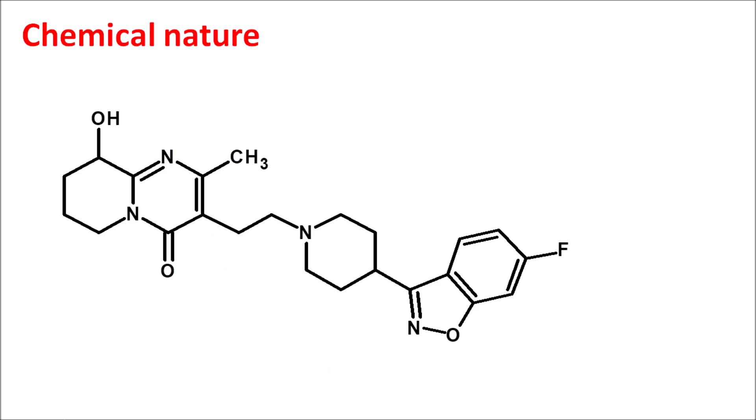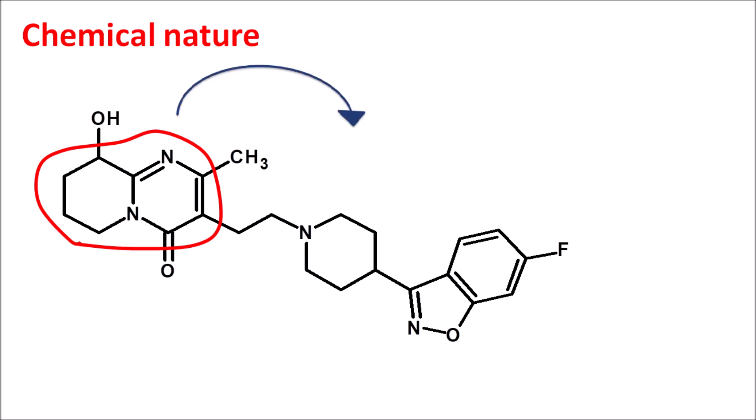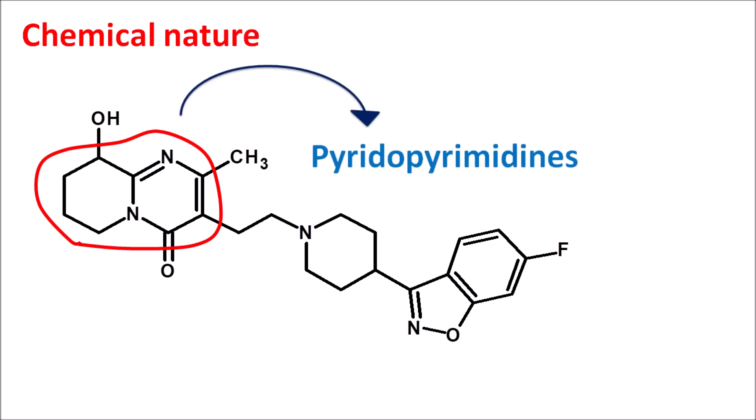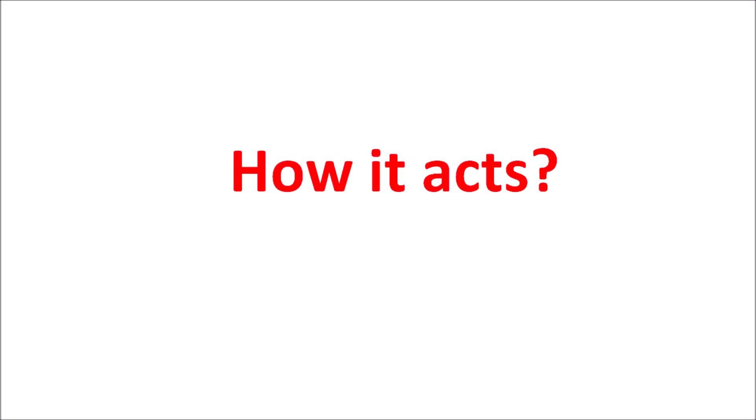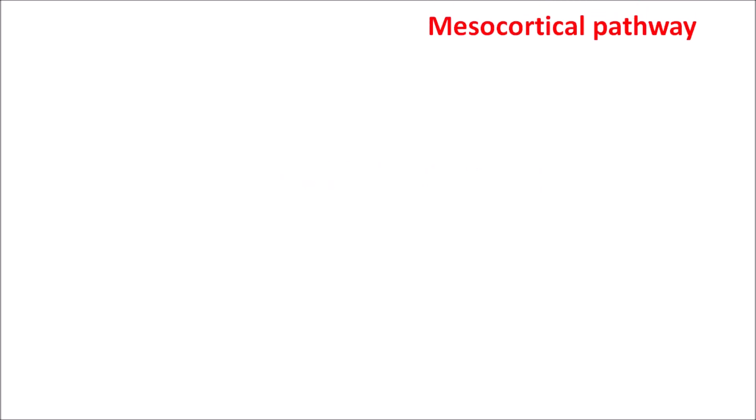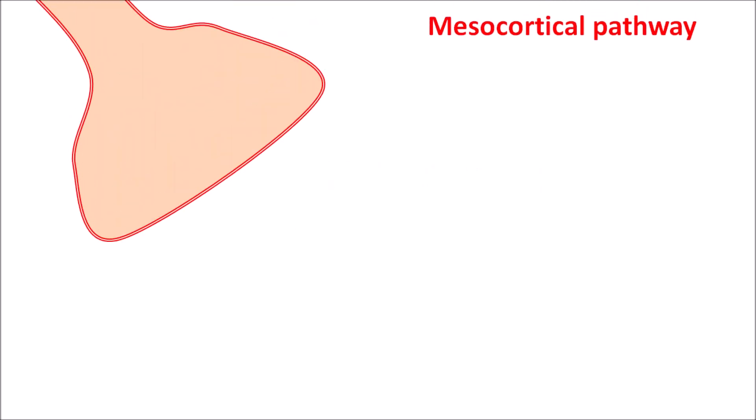This drug is also indicated in schizoaffective disorders, where depression is associated with psychotic symptoms. Regarding its chemical nature, paliperidone contains a fused heterocyclic ring system called pyridopyrimidine, so paliperidone belongs to the class of pyridopyrimidines.